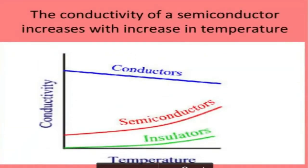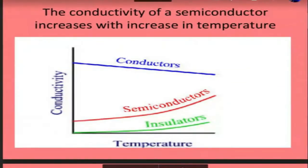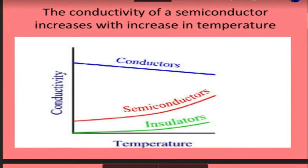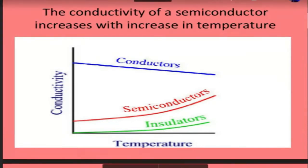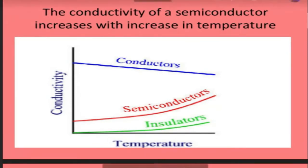Here is a graph which will help you understand the relationship between temperature variation and conductivity for three types of materials. Draw this graph: x-axis is temperature, y-axis is conductivity. The graph shows how temperature affects conductivity for insulators, semiconductors, and conductors — how each one behaves differently.